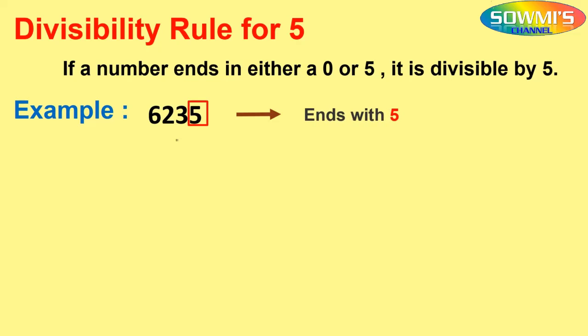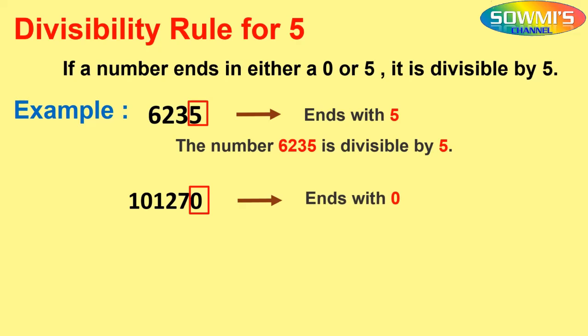Take the next number, 101,270. This number ends with 0, so the number 101,270 is divisible by 5.